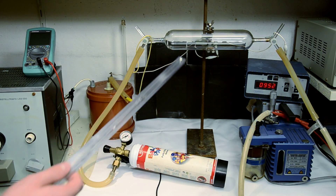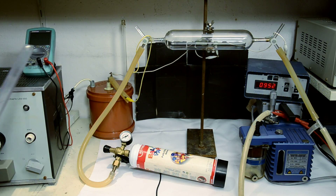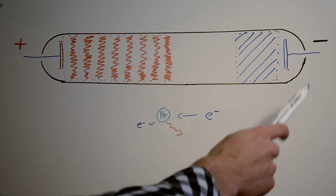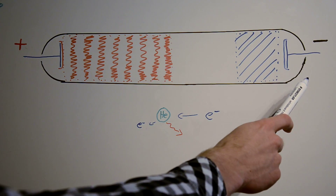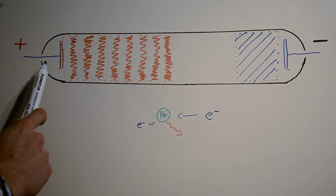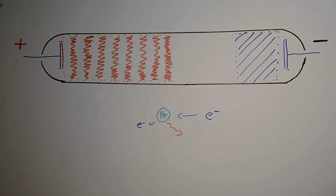The voltage we use for this is about 10 kV — not that much, but it is enough to get what we want. In the vacuum discharge tube we have a cathode and an anode, and between them is a voltage of about 10 kV.